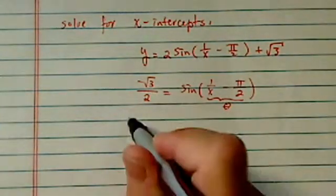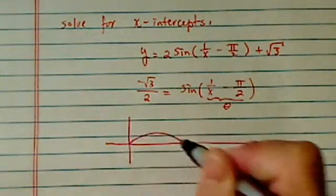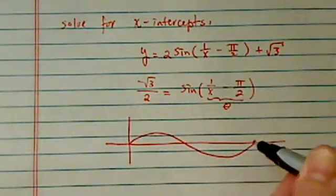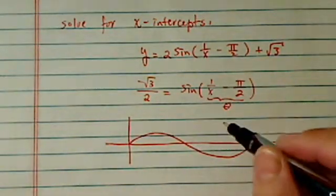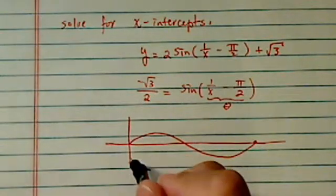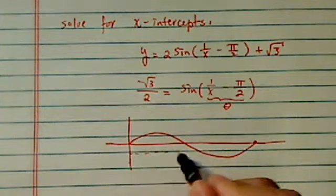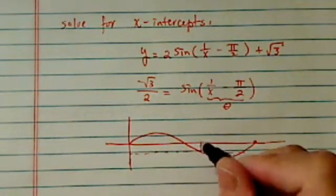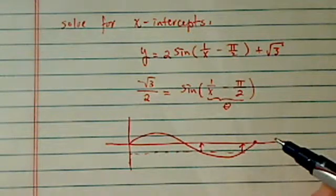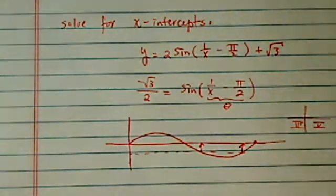So sine theta equals this value. In order to solve this, we're going to draw the sine curve and restrict it to 0 to 2 pi. The value is minus radical 3 over 2. Radical 3 is 1.732, so it's roughly located in quadrant 2, quadrant 3, and quadrant 4, where sine is negative.